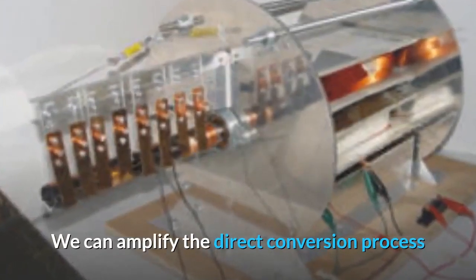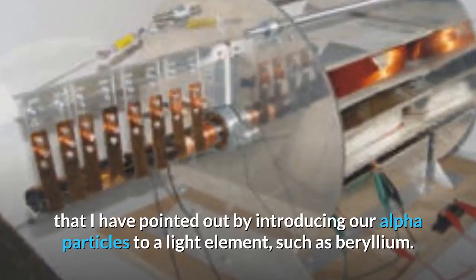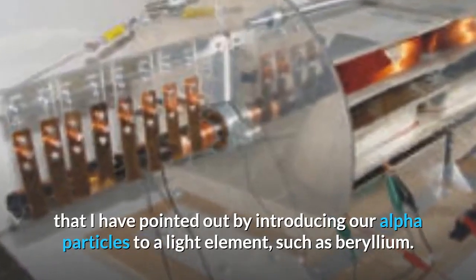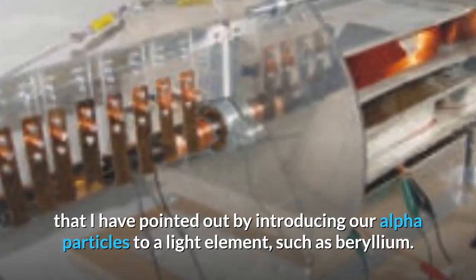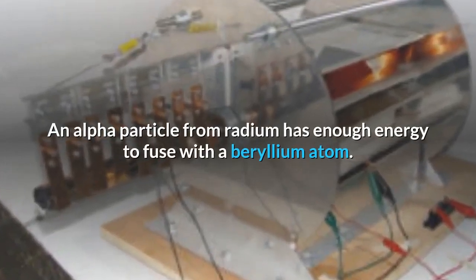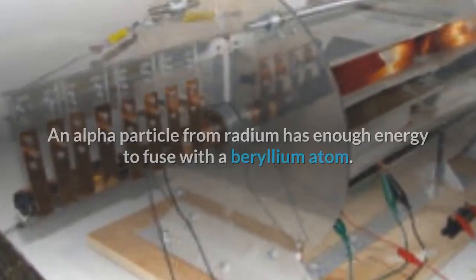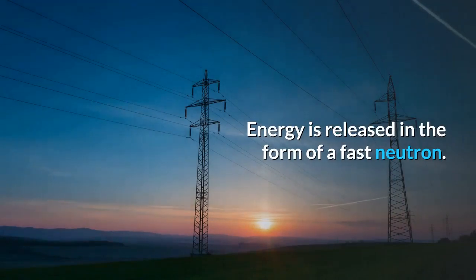We can amplify the direct conversion process that I have pointed out by introducing our alpha particles to a light element such as beryllium. An alpha particle from radium has enough energy to fuse with a beryllium atom. Energy is released in the form of a fast neutron.